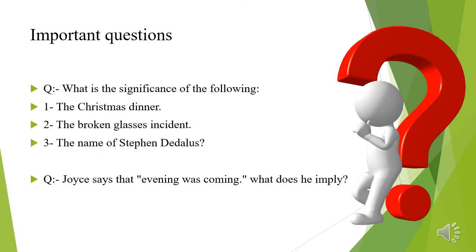Now we have some critical questions to focus on. First, what is the significance of the Christmas dinner, the broken glasses incident, and the name of Stephen Daedalus? These were all discussed earlier — please pay close attention so we can discuss them further. The other question is: Joyce says that evening was coming — what does he imply? What is the fear that James Joyce conveys? This is present in the open discussion and I would like you to reply to and answer this question.